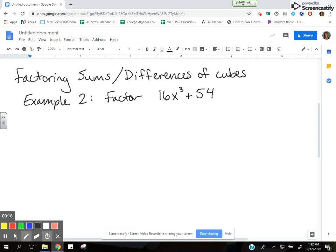If I need to completely factor this, the first thing we want to do is always look for a greatest common factor (GCF). In this case, I can divide both terms by 2. So if I rewrite my factors with the factor of 2 pulled out, I'm going to have 2(8x³ + 27).